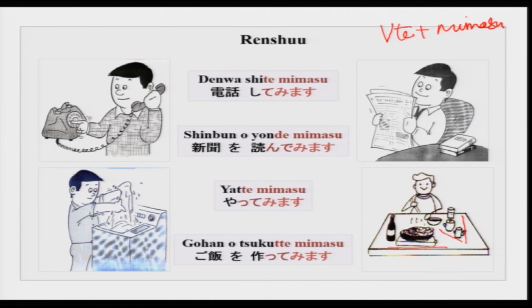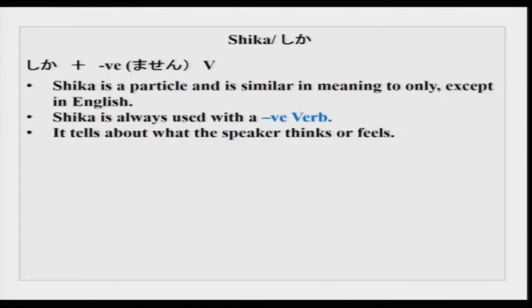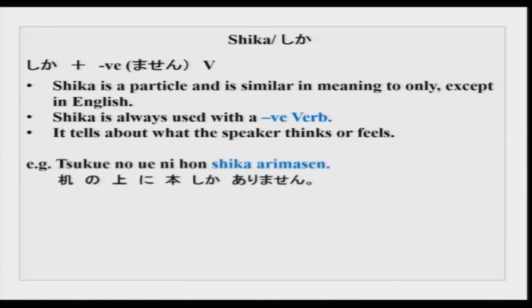You can practice verb in te-form plus mimasu like this — take up a photograph, think of a situation and try to use te-mimasu form. Now there was something else in the kaiba as well — there was shika, this particle shika. Shika is a particle and means except or only in English. One very important thing with shika is that it is always to be used with a negative verb. It tells about what the speaker is thinking, how the speaker feels, and what is the reaction of the speaker regarding a certain comment or situation. From the example here: tsukue no ue ni hon shika arimasen — what does it mean?